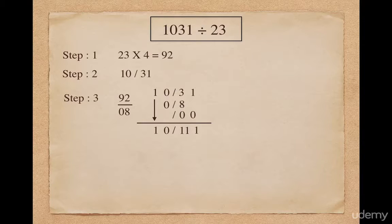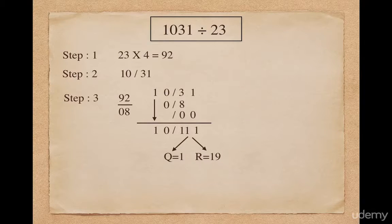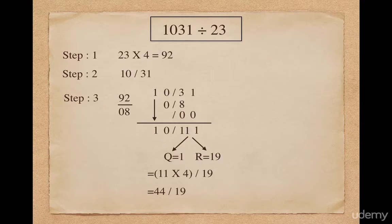Here 111 is greater than our new divisor 92, so I will have to divide 111 by 92, which gives me quotient as 1 and remainder as 19. Please remember that in the first step I multiplied 23 with 4, so in the last step I will have to multiply the final quotient with 4. So I multiply 11 with 4, giving a final quotient of 44 and remainder of 19. So the answer is: quotient is 44 and remainder is 19.